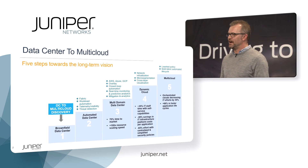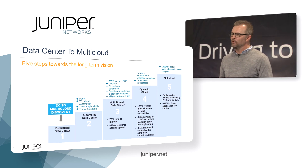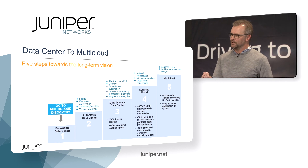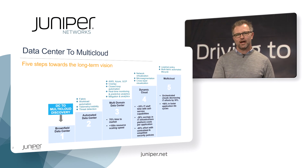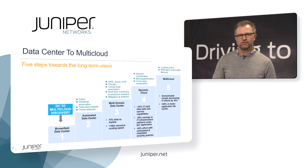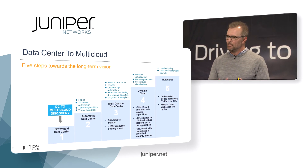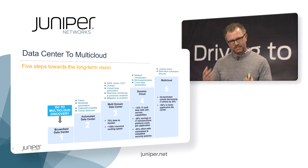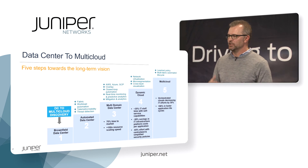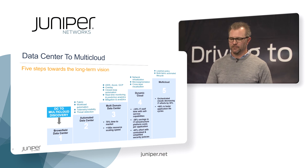Finally, at step five, we are getting into this nirvana of secure and automated multi-cloud. Here we're talking about tethered policy, where a network policy and a security policy is associated with the application itself — so when apps are deployed, the policy and the network topology follow that application. We get into multi-fabric automated life cycle, managing the entire network from end to end as a single fabric. This is really where we see the greatest gains in efficiency, reducing IT effort, and improving the application life cycle significantly.